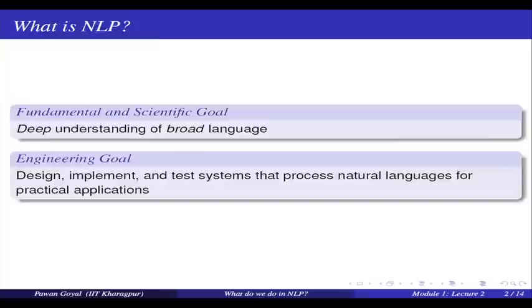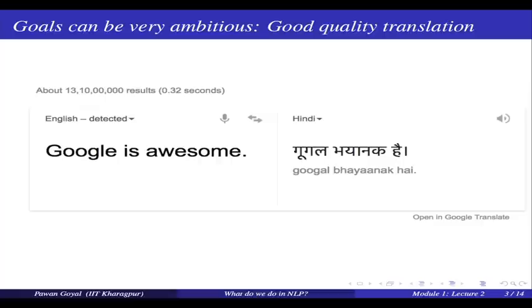Now, what are these engineering goals? Let us see with some examples. These goals can be very ambitious. As a fun example, although we use Google Translate every now and then, getting a very good, perfect translation is a very ambitious goal. This is a snapshot taken from the Google Translate page. If I type 'Google awesome' and translate from English to Hindi, it just comes out as 'Google' — that is not a good translation for this term.